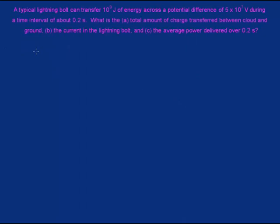A typical lightning bolt can transfer 10 to the 9 joules of energy across a potential difference of 5 times 10 to the 7 volts during a time interval of about 0.2 seconds. What is the (a) total amount of charge transferred between cloud and ground, (b) the current in the lightning bolt, and (c) the average power delivered over 0.2 seconds. Okay, so part A we're looking for the amount of charge.